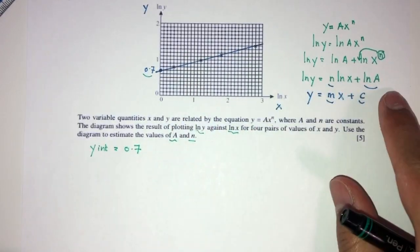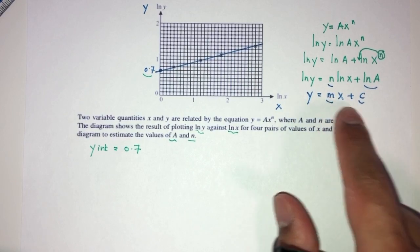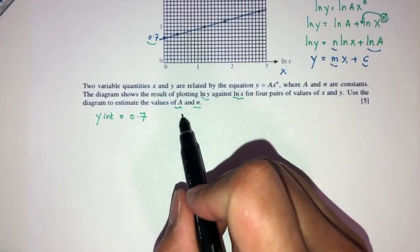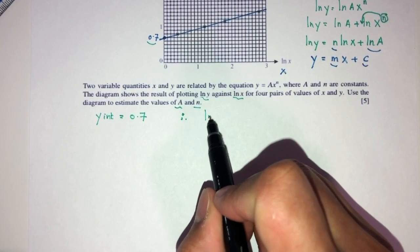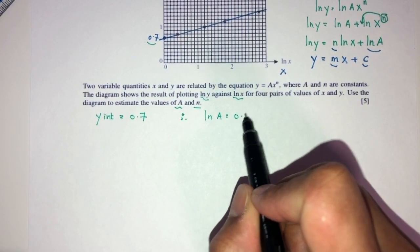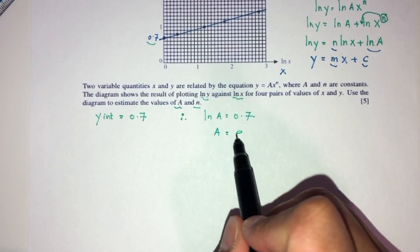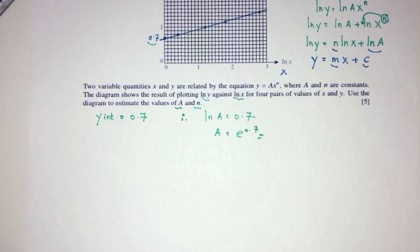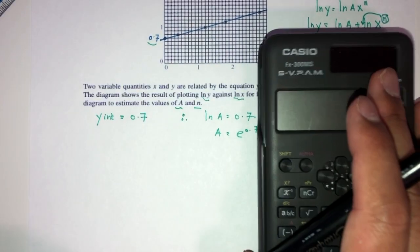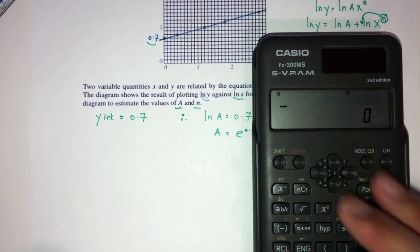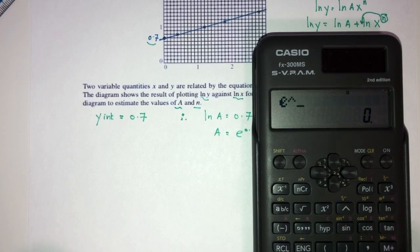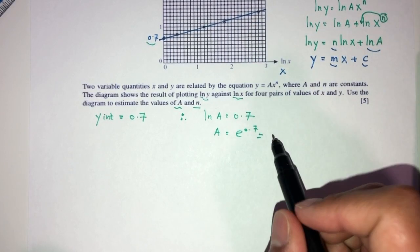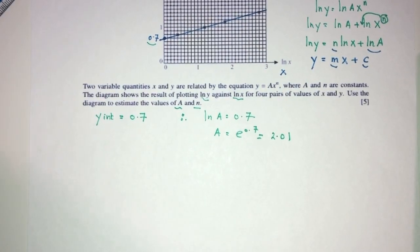Now, by comparison to my equation, I know that Y equal to MX plus C, this last one here is supposed to be your intercept. So I can conclude, ln of A has to be 0.7. Thus, A has to be exponential of 0.7. Of course, let's solve for this value. 0.7, that should be 2.01, correct to 3 significant figures. That is the value of A.